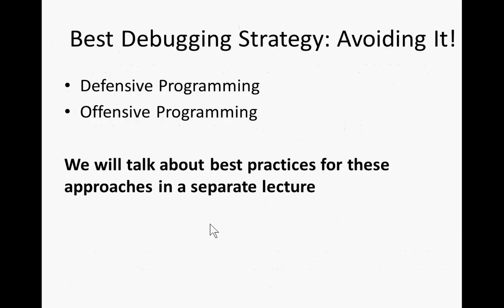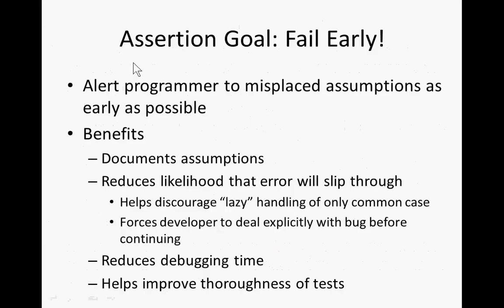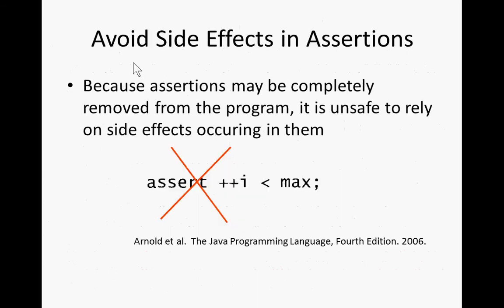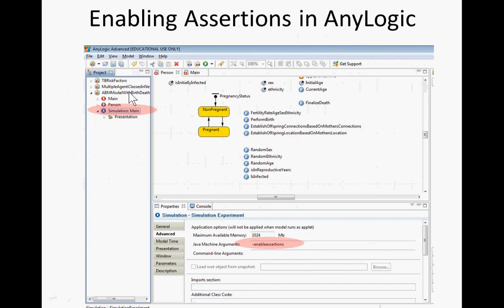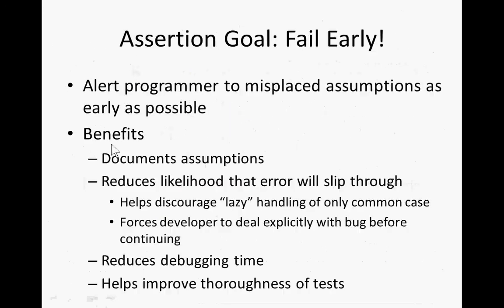One of the key processes that will help prevent bugs are peer reviews — having other people look over your model, either while you're building it side by side in what's known as pair modeling, or by looking at it after the fact in what might be called a peer desk check or even a formal inspection. There are other ways too — for example, trying to get your model to fail as quickly as possible if one of your assumptions is wrong. We make use of something called assertions, and it's very easy to enable assertions within Java using the assert keyword.